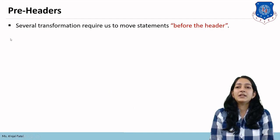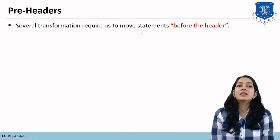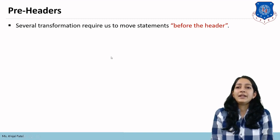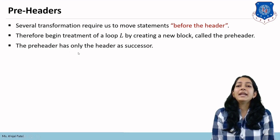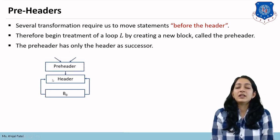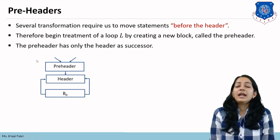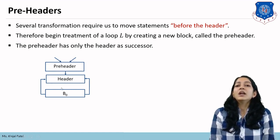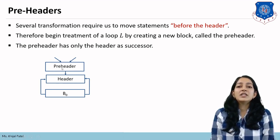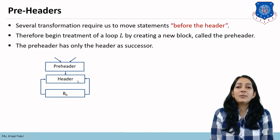Next are pre-headers. Several transformations require moving statements before the header. Therefore, we begin treatment of a loop L by creating a new block called the pre-header. The pre-header has only the header as its successor. If we make any changes, we make them in the pre-header so they don't affect other blocks of the program.